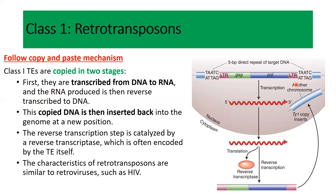In this way, the original transposable element stays at its position and produces a new copy of itself. To summarize: class one retrotransposons first produce an RNA, which is reverse-transcribed into DNA, and that DNA is inserted back into the chromosome at some other position — either the same chromosome or a different chromosome.